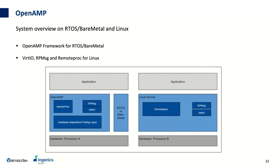Here is a system overview of OpenAMP used on FreeRTOS/bare metal and Linux. On the FreeRTOS/bare metal side, the OpenAMP middleware provides the remote proc component, RPMsg, the virtual I/O component, and a hardware-dependent porting layer for the specific platform. On the Linux side, the Linux kernel already contains a remote proc driver, RPMsg driver, and virtual I/O driver. Components on each side interact via shared memory and inter-processor interrupts (IPIs).